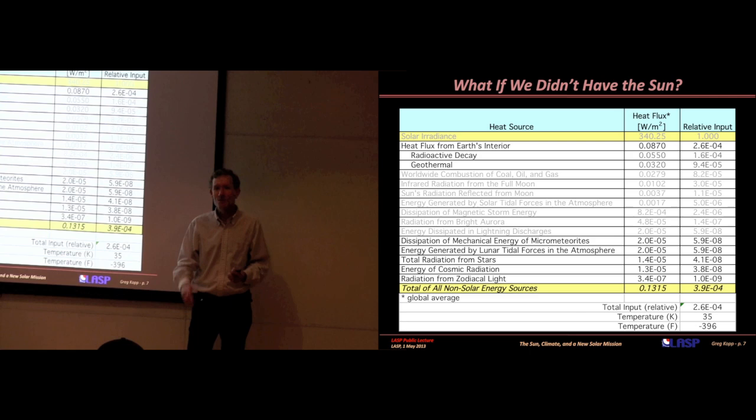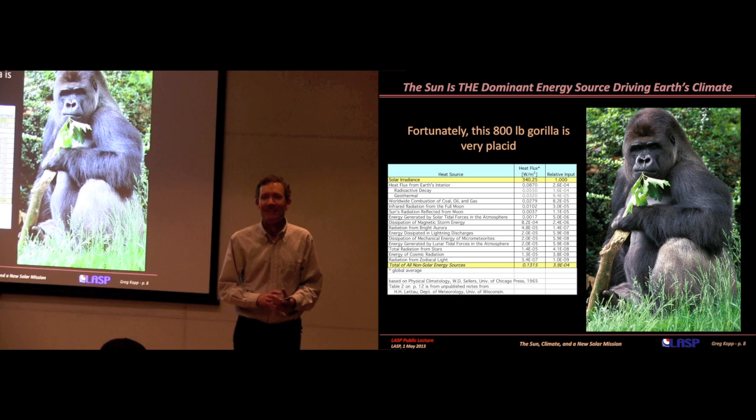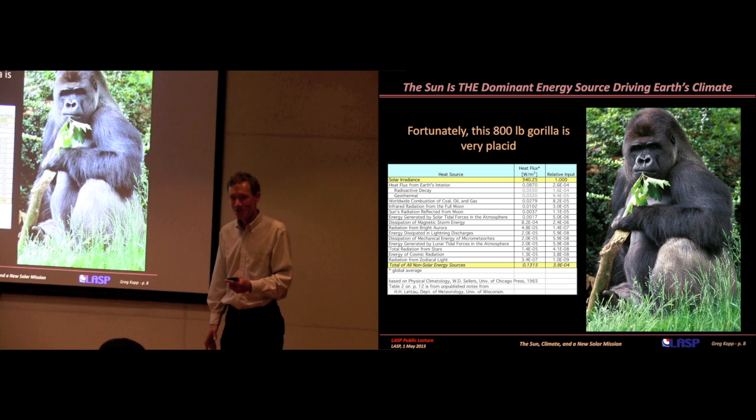In the climate world, it's the 800-pound gorilla. Luckily, it's a very stable gorilla. A very classic one. If it changed a lot, we would definitely notice it here. Luckily, the sun has been very stable and hopefully will continue to be stable for another 10 billion years or so.